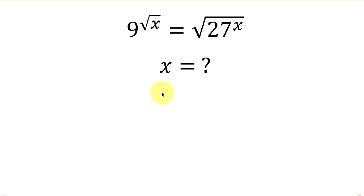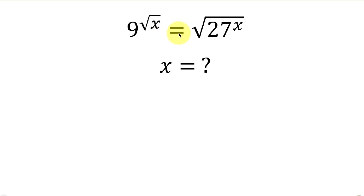Welcome back to my YouTube channel. Let's solve this math question that says: find the values of x for which 9 to the square root of x is equal to the square root of 27 to the x.